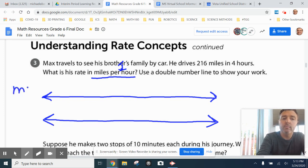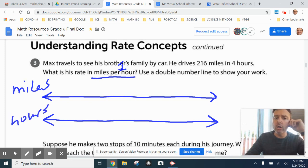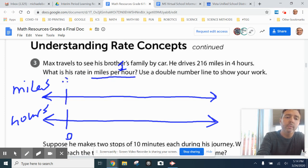We'll do miles on top and hours on the bottom. Now with these double number lines, the important thing to know pattern-wise is that it'll start with zero for the hours and zero for the miles, which makes sense. He's gone zero miles in zero hours when he first starts.